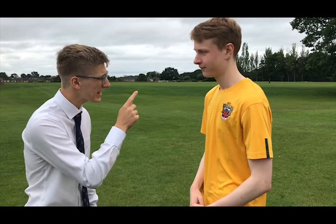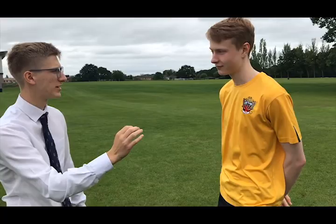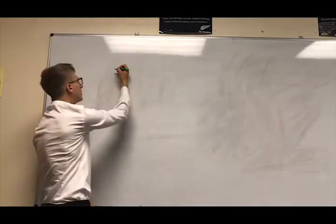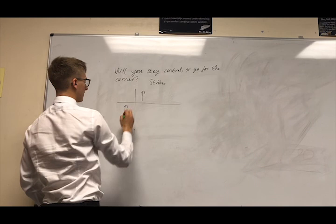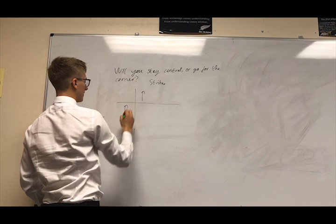If he shoots down the middle and you stay down the middle, he has a 0% chance of scoring. Let us consider the situation from the point of view of the striker. We can draw a payoff matrix which shows all possible outcomes for the probability of scoring a goal. Suppose that the probability of the striker shooting straight is p.